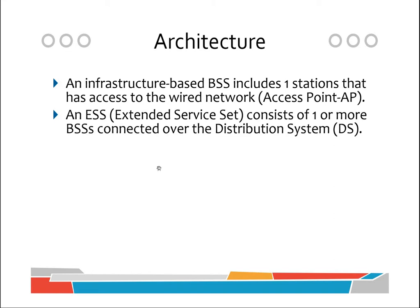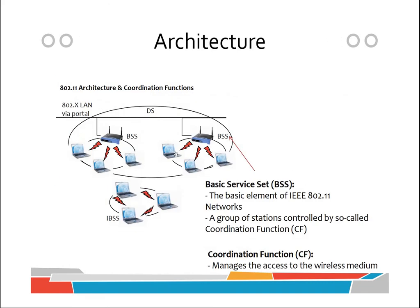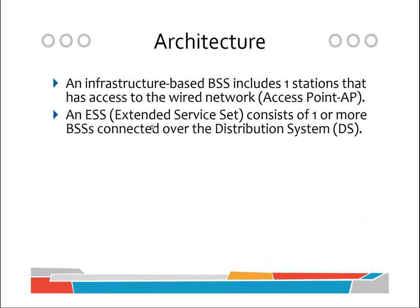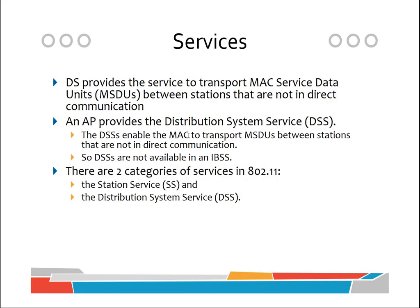An extended service set (ESS) consists of one or more BSSs connected over the distribution system (DS). The DS provides the service to transport MAC service data units (MSDUs) between stations not in direct communication. The whole structure — the distribution system along with two or more basic service sets — is collectively called an extended service set or ESS.